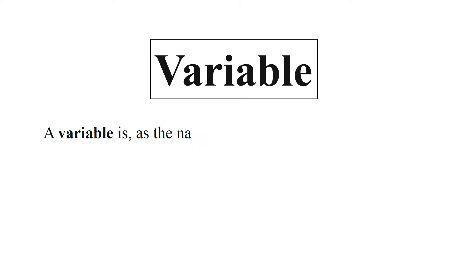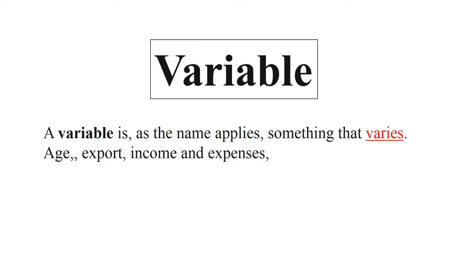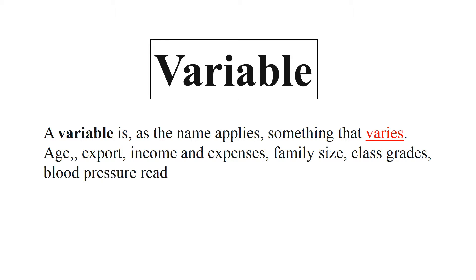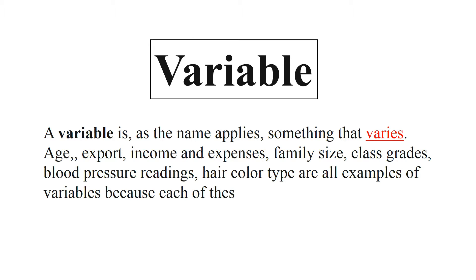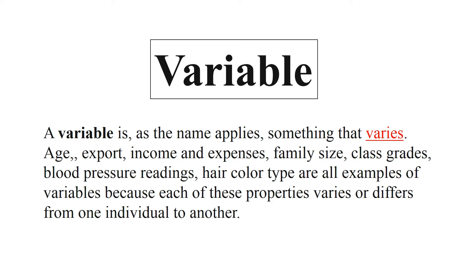First, let's define what is meant by a variable. A variable, as the name implies, is something that varies — that is, not fixed or constant. For example, age, income and expenses, family size, class grades, blood pressure readings, and hair color are all examples of variables because each of these properties varies or differs from one individual to another.